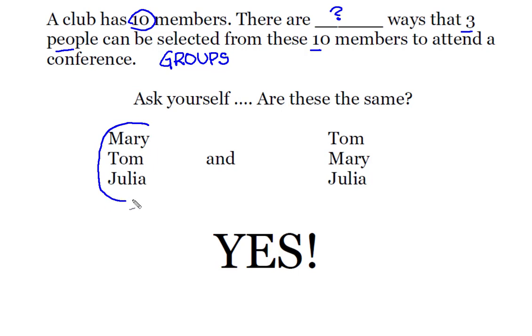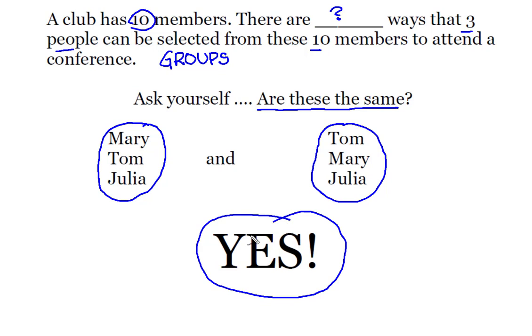In this case, I'm trying to determine how many different groups of three people can I send to the conference. My first grouping is Mary, Tom, and Julia. And my second grouping is Tom, Mary, and Julia. When I look at these two, I ask myself, are these the same? And my answer here is yes.